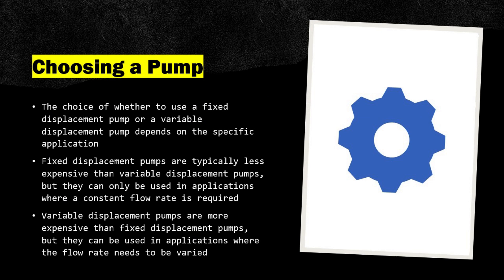When choosing a pump, the decision between a fixed displacement pump and a variable displacement pump depends on the specific application. Fixed displacement pumps are typically less expensive, but can only be used where a constant flow rate is required. Variable displacement pumps are more expensive, but can be used in applications where the flow rate needs to be varied.